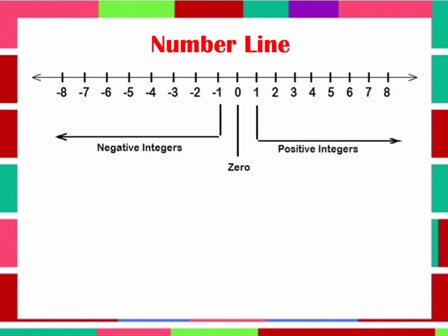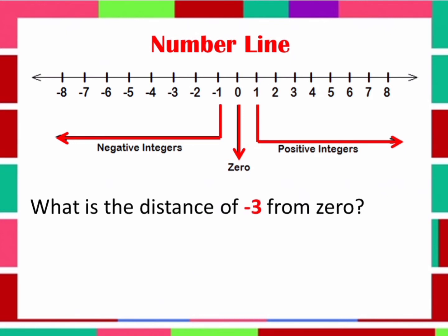I have here a number line. We all know that a number line consists of 0, positive numbers, and negative numbers. Now, using the number line, what is the distance of negative 3 from 0? From 0, we move to negative 3. Let's count: 1, 2, 3. So, the distance of negative 3 from 0 is 3. To represent it in Absolute Value, the Absolute Value of negative 3 is equal to 3.